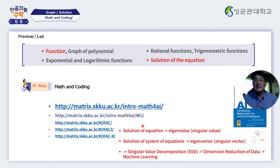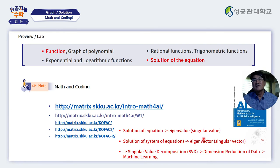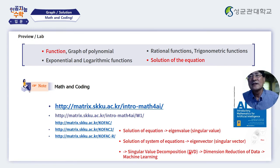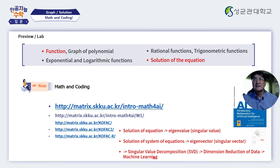In the first week, we're going to learn how to solve equations — how to find the solution of an equation. That will be used to find the eigenvalues of a matrix and also the singular values of a matrix. From there, we'll be able to find the eigenvectors of a given matrix and also the singular vectors of a given matrix. With this knowledge, singular value decomposition will be understood, and SVD will be used for the dimension reduction of given data, which is an essential part of machine learning.